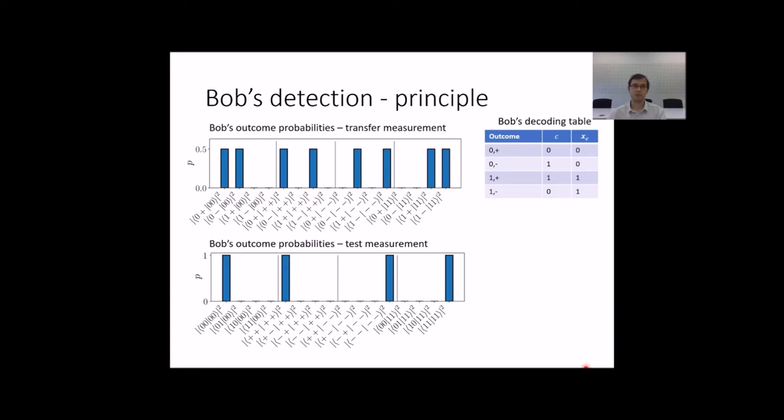Let's see how it works. Top-left plot shows probabilities of Bob's outcomes with respect to Alice's input. There are two possibilities for each Alice's choice. This is where the randomness in choice of C comes from. Bob translates the measurement outcome according to the table on the right. For example, when the outcome is 0 and plus, it means that C equals 0 and XC equals 0. In the testing mode, there is a single possible outcome for each of four possible input states.